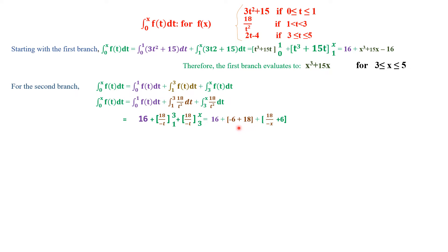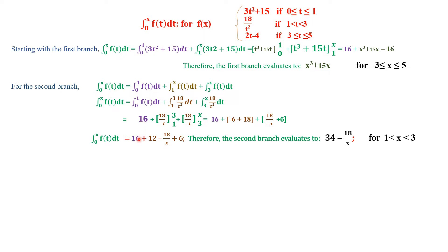Grouping everything: the first term is 16, the second term evaluates to 12, and the third term is negative 18 divided by x plus 6. Adding 16 plus 12 plus 6 gives 34. Therefore the second branch evaluates to 34 minus 18 divided by x, valid for the open interval where x is between 1 and 3.